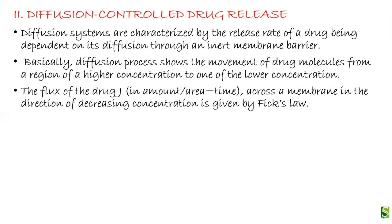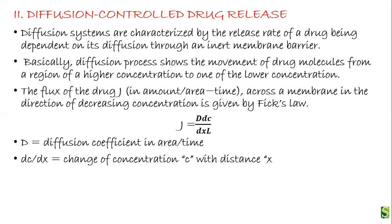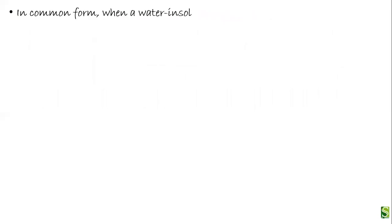The flux of the drug, that is J in amount per area per time, across a membrane in the direction of decreasing concentration is given by Fick's Law. Fick's Law states that the amount of drug released per area per time is equal to D multiplied by DC/DX divided by L, where D is the diffusion coefficient in area per time, DC/DX is the change of concentration C with distance X, and L is the length of the polymeric membrane.